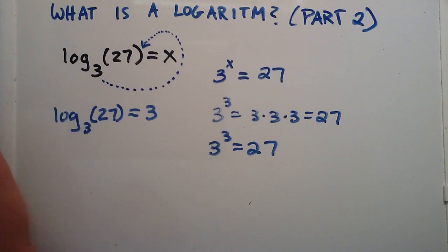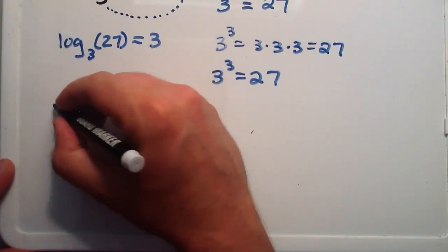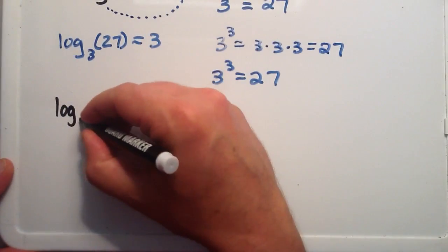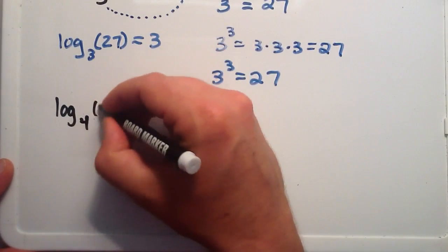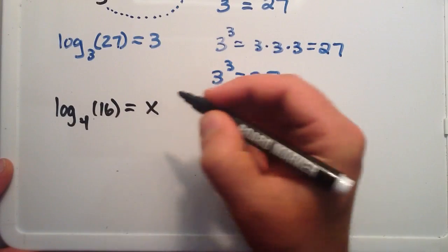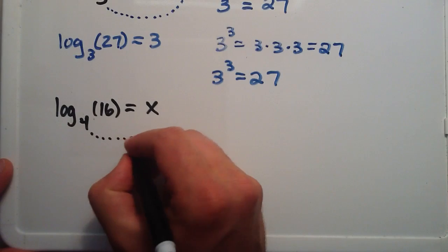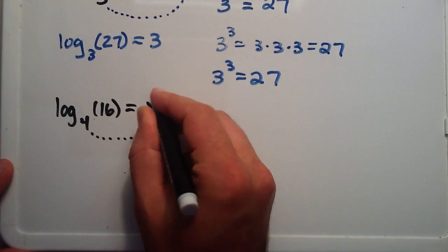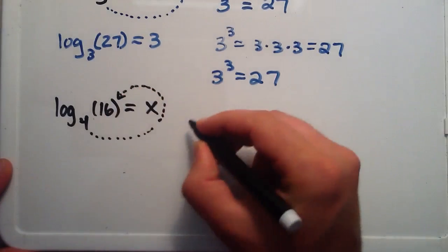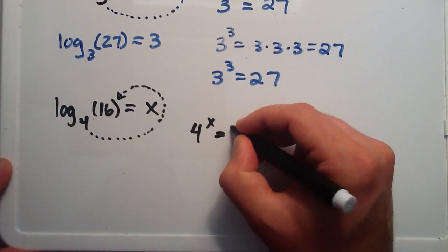So let's try one more example here. What if we had log base 4 of 16? And that's equal to some number. Well, we just take 4 raised to some power equals 16. 4 raised to the x equals 16.